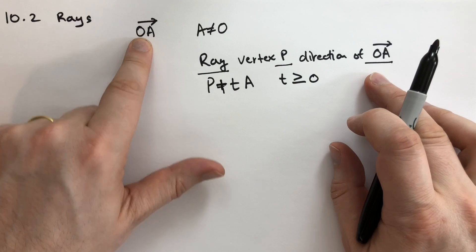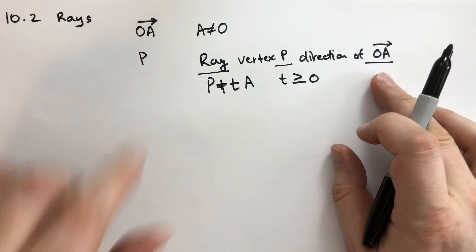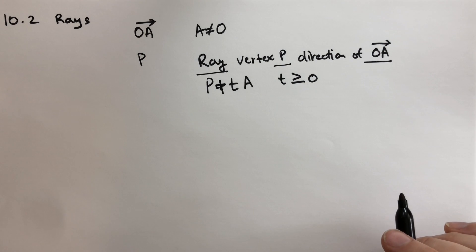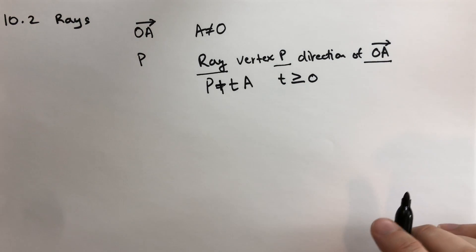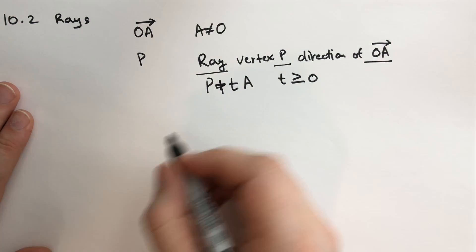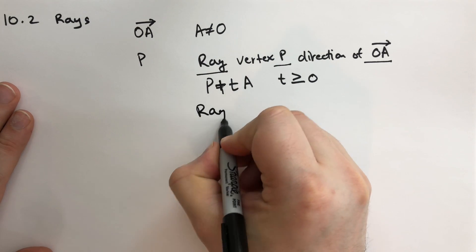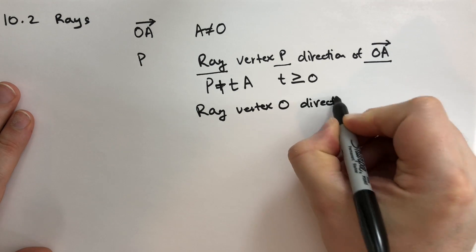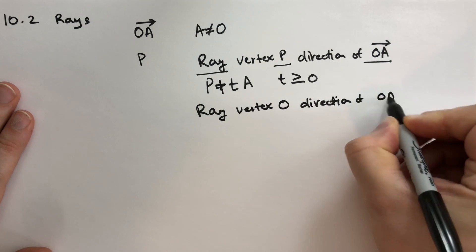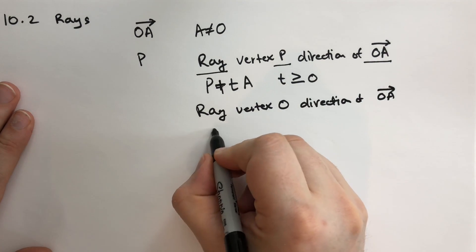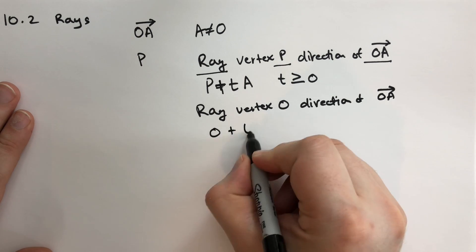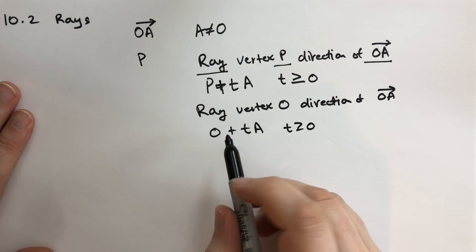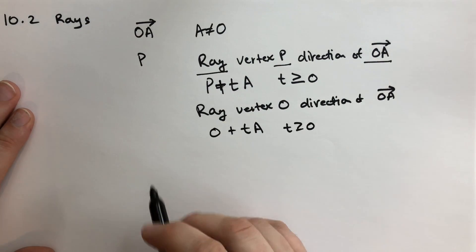Same direction as the located vector OA — at this point we'll just call it the vector. You can also have another ray: the ray with vertex at the origin O in the direction of OA. That's just going to be the origin, which is zero, plus tA where t is greater than or equal to zero. And you should be able to see that these two are translations of each other.